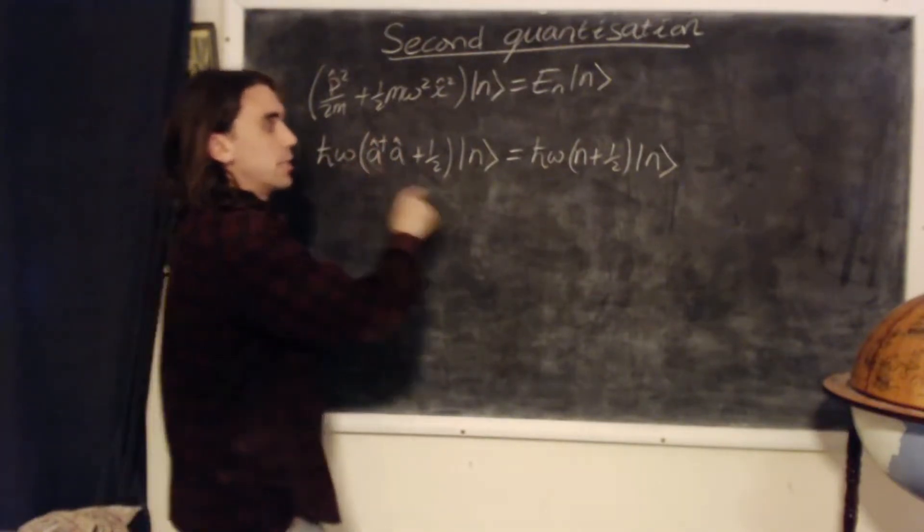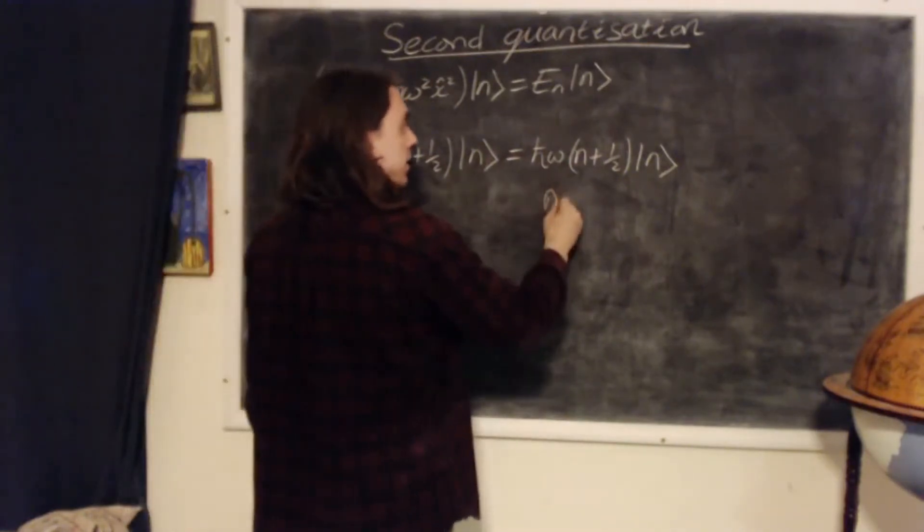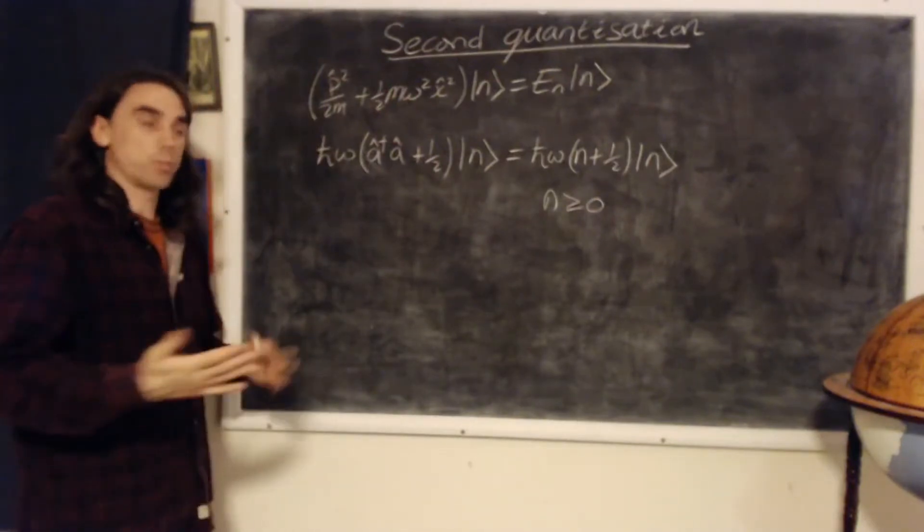Called the number operator, which returns the integer n labelling the state, where n is an integer greater than or equal to zero.